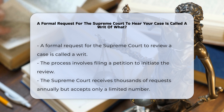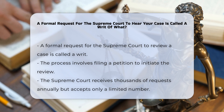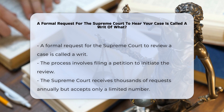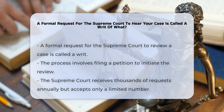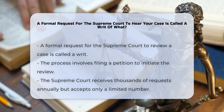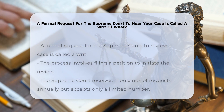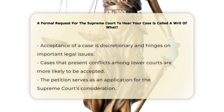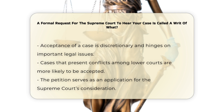When a party seeks to have their case reviewed by the highest court in the land, they must follow a specific legal process. This process involves filing a formal request to the Supreme Court, which is a crucial step in the appellate process. The Supreme Court receives thousands of these requests each year, but only accepts a limited number. The decision to accept a case is discretionary and depends on whether the case presents important legal issues or conflicts among lower courts.